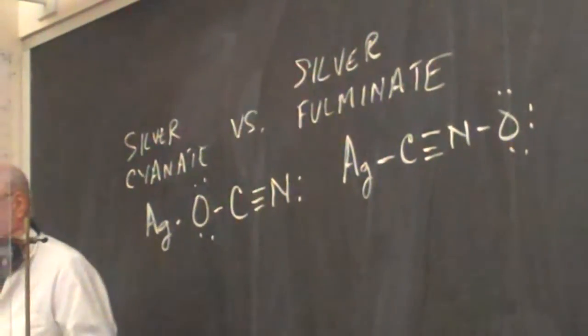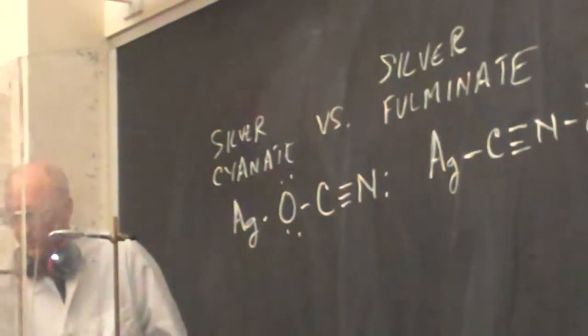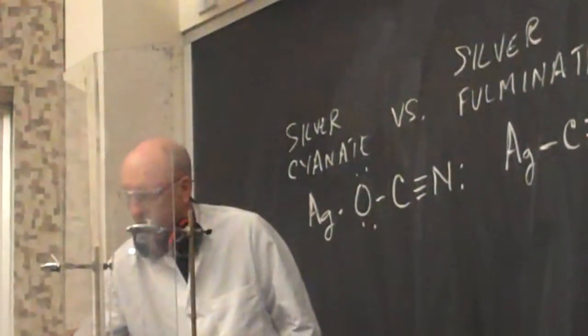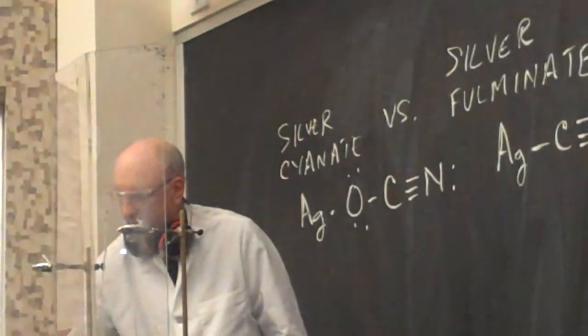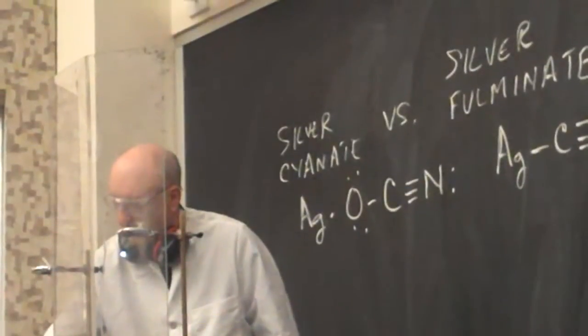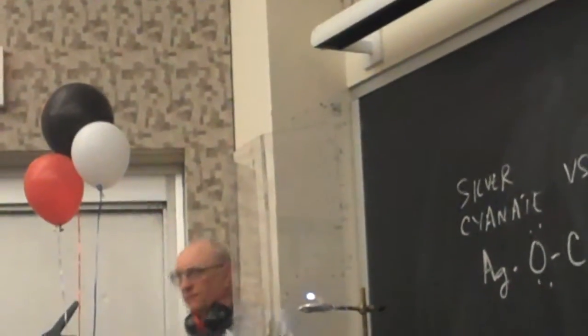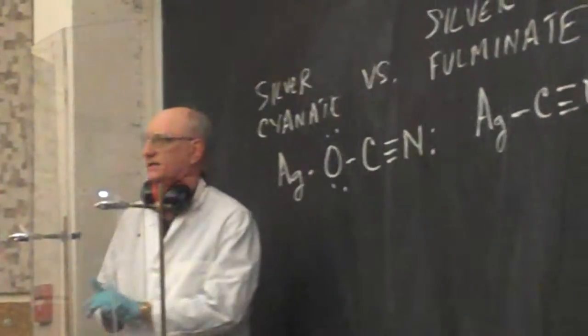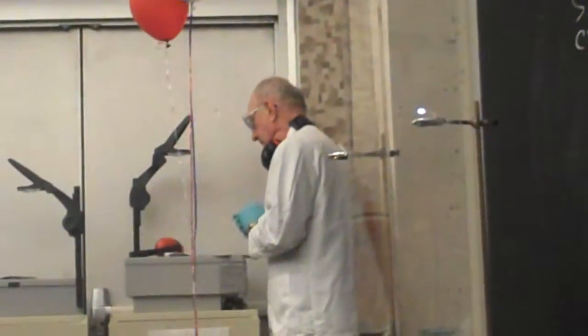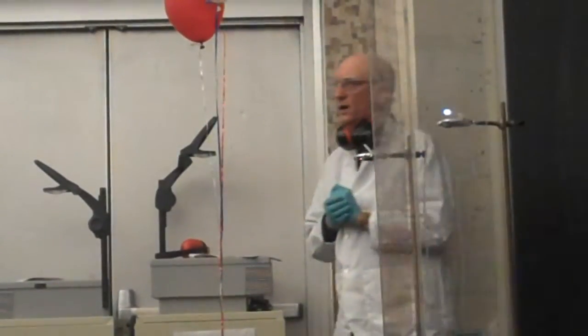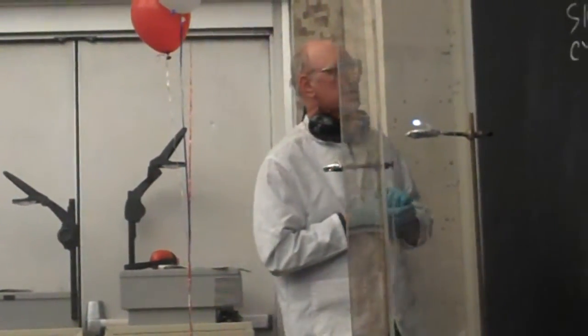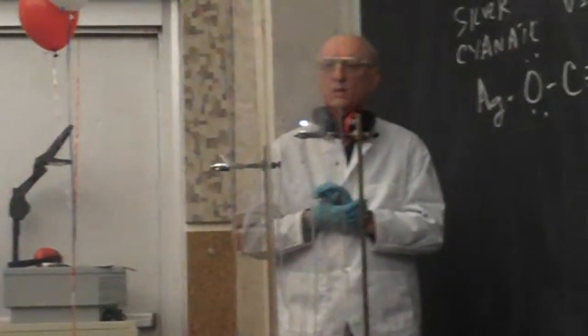The basic history behind this is that we had a number of different scientists in the 1800s creating these compounds. One was a number of Dutch and German scientists creating different types of fulminates. And then in 1827, there were two scientists — von Liebig and Friedrich Wöhler — who developed two different compounds: silver cyanate and silver fulminate.